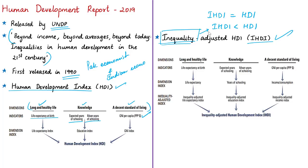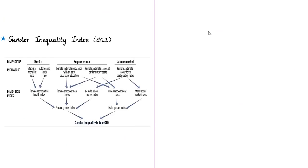The Gender Inequality Index (GII) measures gender inequalities in three aspects: reproductive health (measured by maternal mortality ratio and adolescent birth rates), empowerment (measured by the proportion of parliamentary seats occupied by females and proportion of adult females and males aged 25 and older with at least some secondary education), and economic status (expressed as labor market participation, measured by labor force participation rate of females and males aged 15 and older).